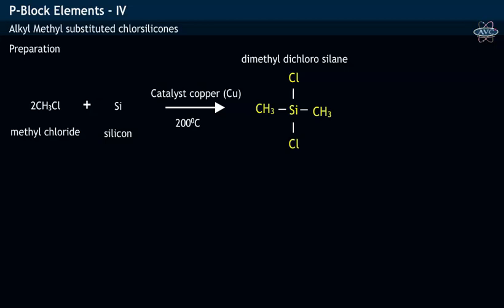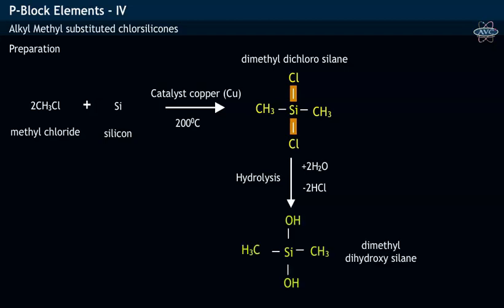From this structure, it may be noticed that the silane molecule consists of two SiCl covalent bonds. Dimethyl chlorosilane on further hydrolysis loses hydrochloric acid and thereby forms dimethyl dihydroxysilane. This compound has two SiOH covalent bonds.